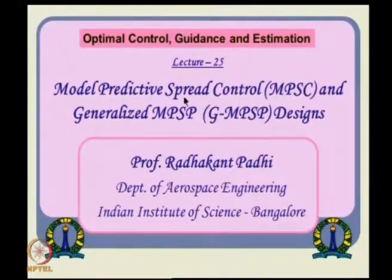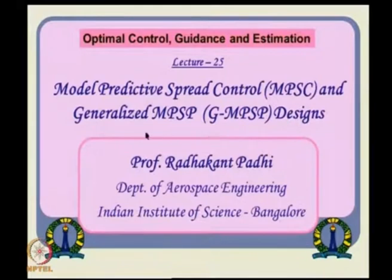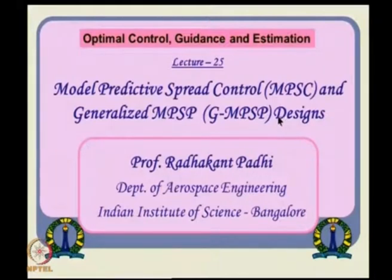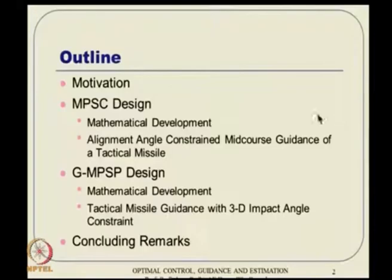Here we will talk about something called model predictive spread control, very close to static programming, but we will also see a slightly different parameterized version. We will also see something very recent — something called generalized MPSP — where we do not want to deal in the discrete domain, but develop this entire procedure in the continuous time domain, where the discrete time thing turns out to be a special case. So let us get going.